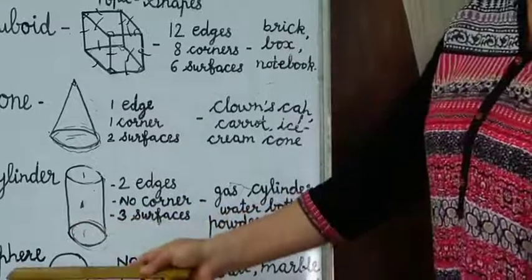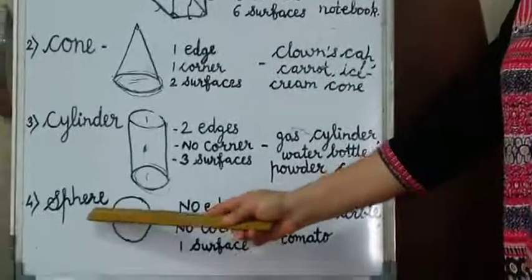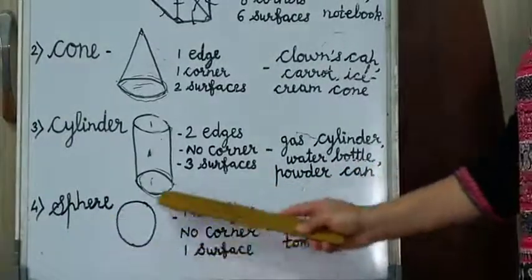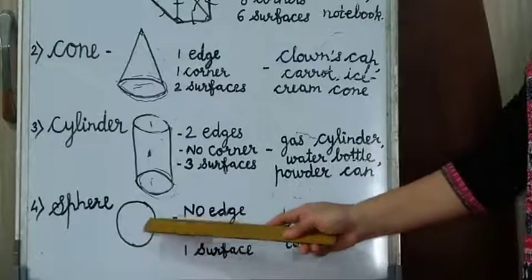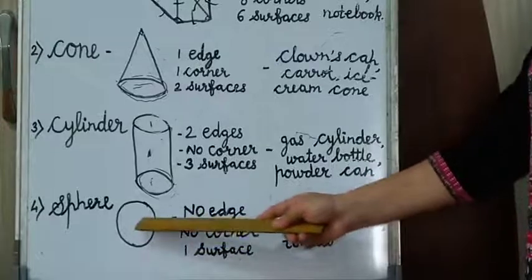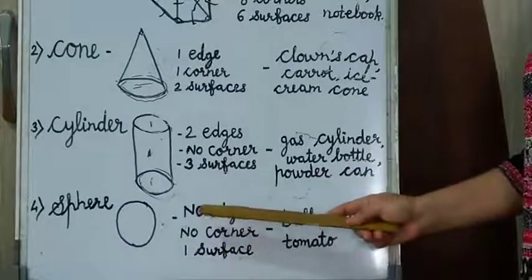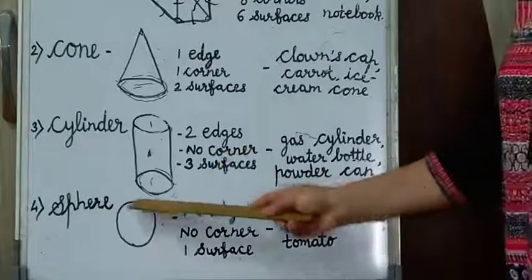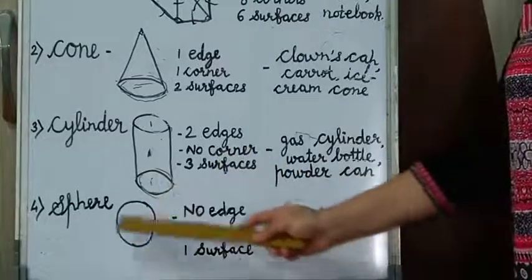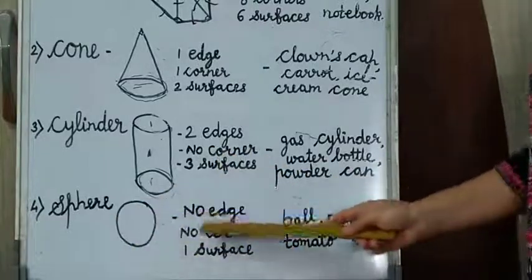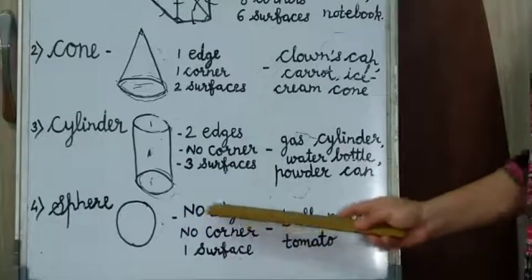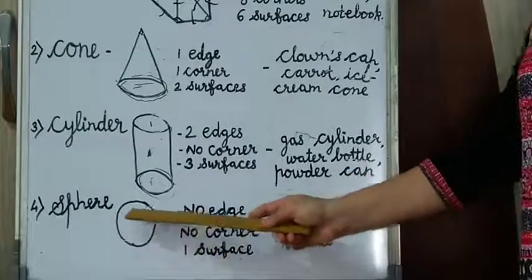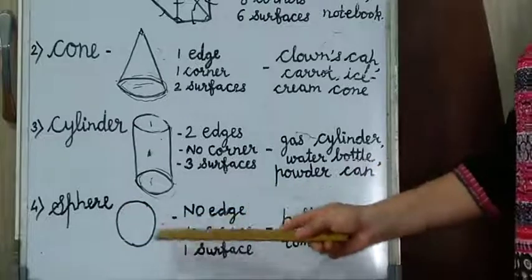Now, children, we will go on the fourth shape. That is a sphere. Sphere is having a circular shape, but it does not have an edge or corner. A sphere is having a circular round shape — no edge, no corner, any side, any corner. And it is having only one surface, and that is also curved and circular.